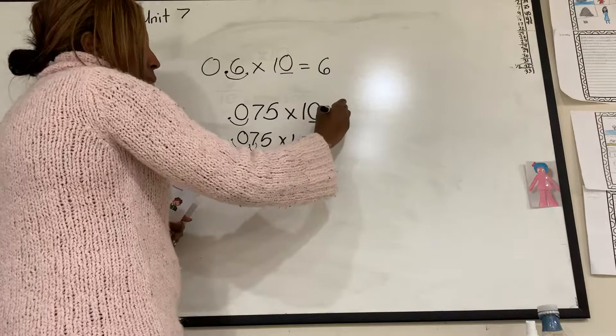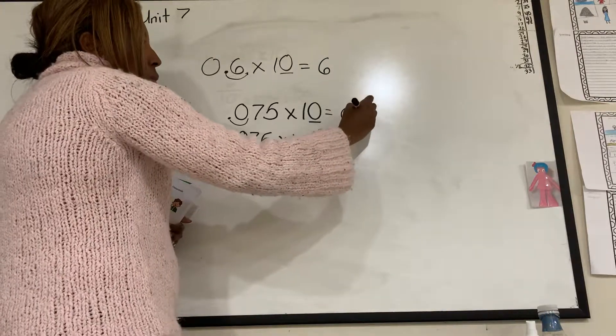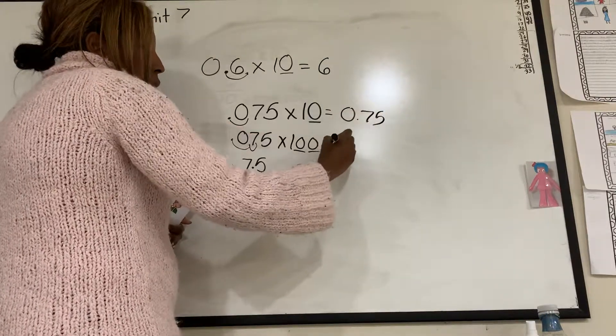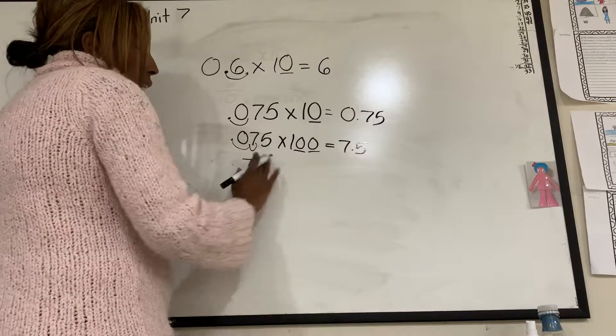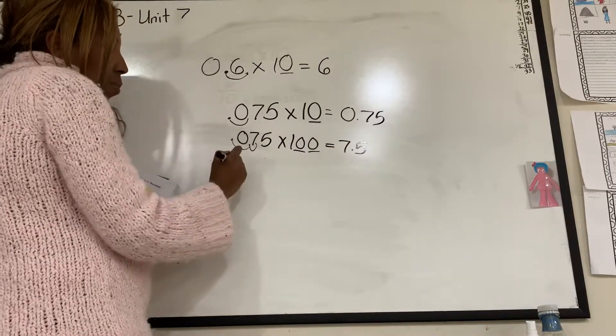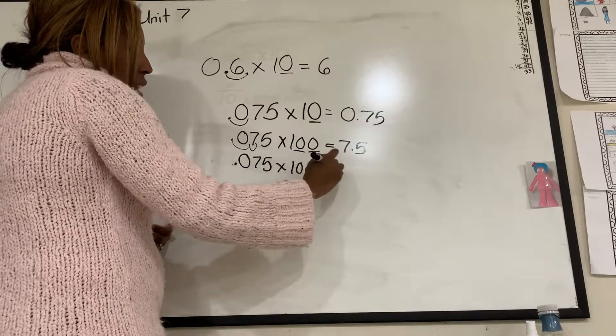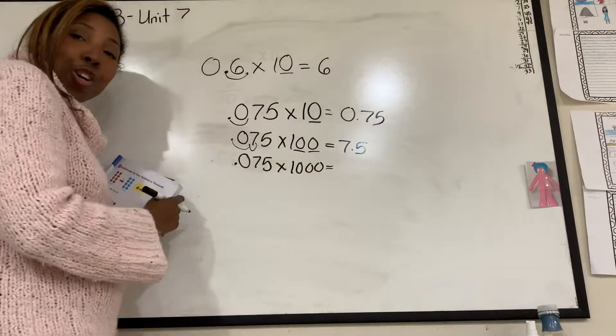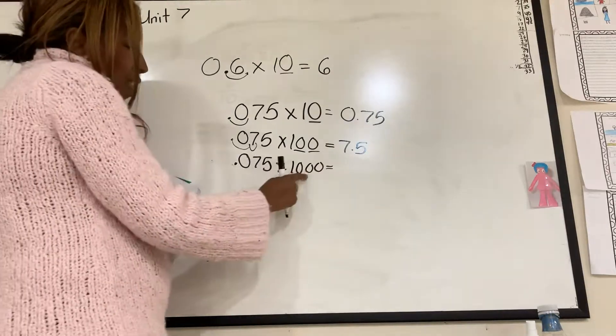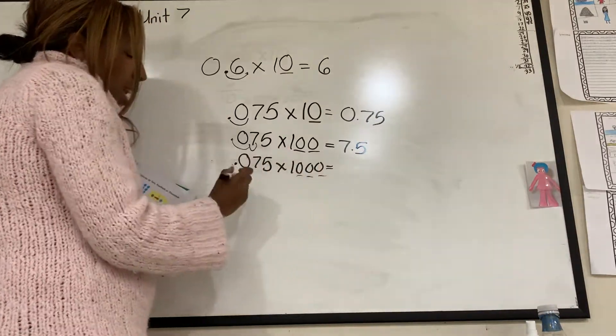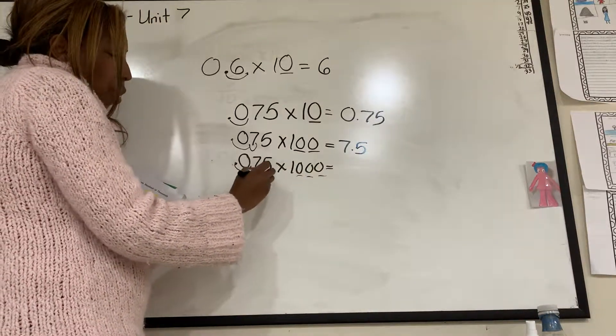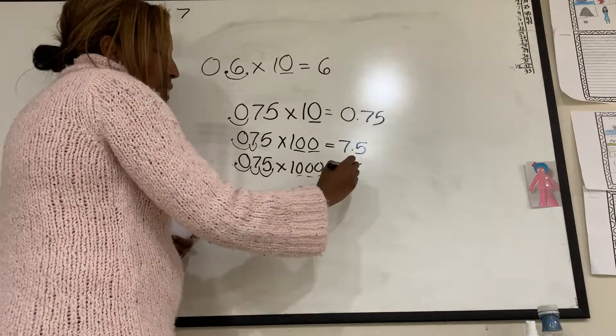Now, if I have the same number, 0.075, and I times it by 1,000, what do you think we do? Yep. Count those zeros. One, two, three. And I move it one, two, three. And now I have 75.